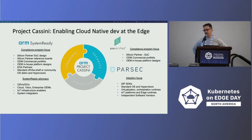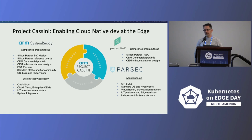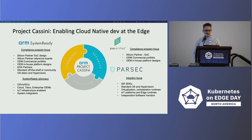The project is called Project Cassini. That's our umbrella project that centers on bringing tools to the market that solve problems around cloud-native development at the edge. This Cassini umbrella project has numerous programs below it, and here we're highlighting a few.